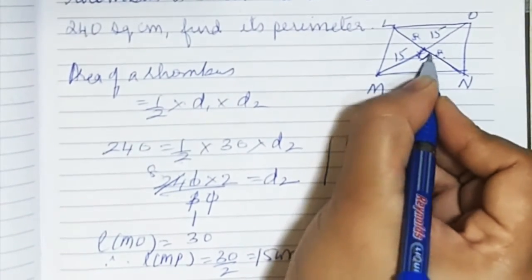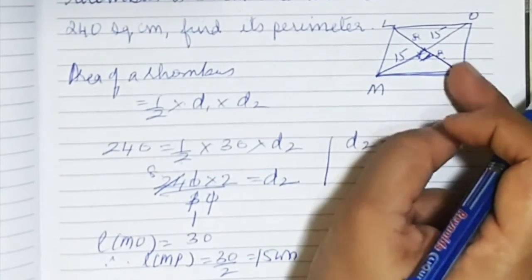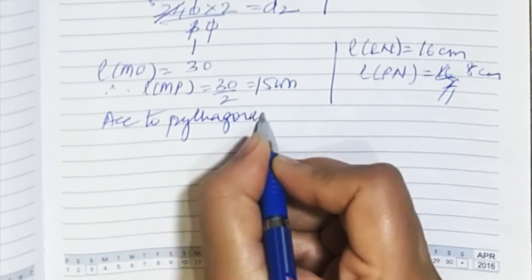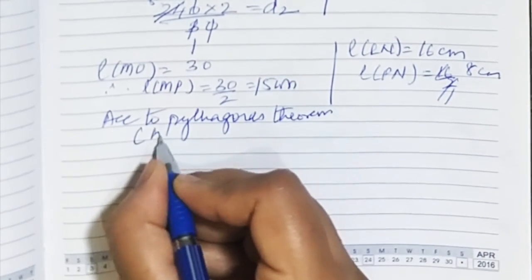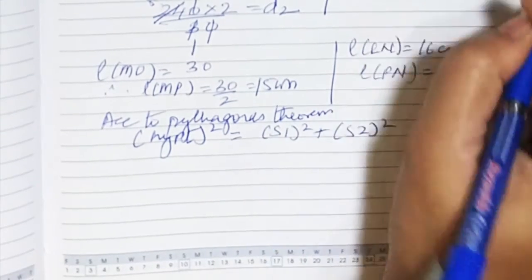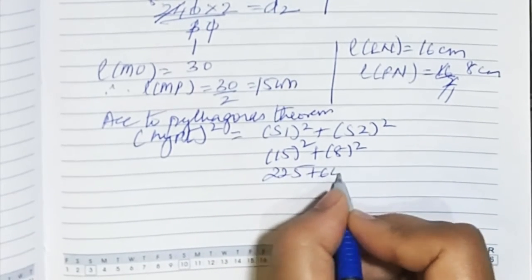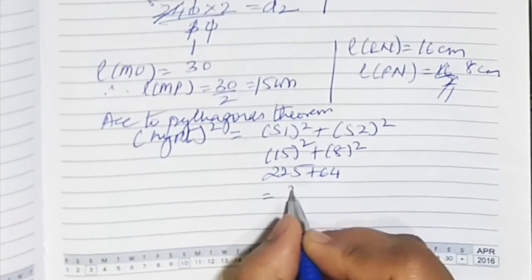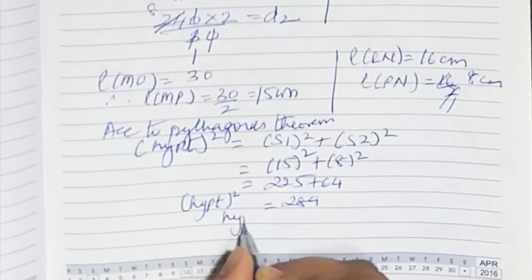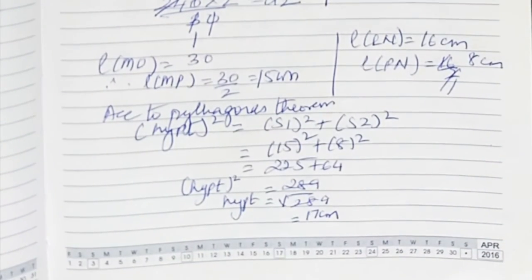We have 15, 8, and a 90-degree angle, so we apply Pythagoras theorem again. This time we need to find the hypotenuse. Hypotenuse squared equals 15 squared plus 8 squared, which is 225 plus 64, giving 289. The square root of 289 is 17 centimetres. So MN, one side of the rhombus, is 17 centimetres.